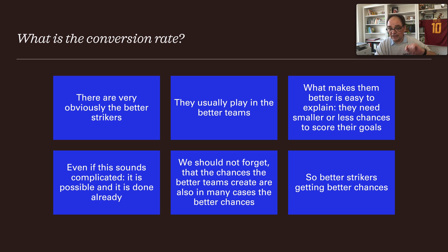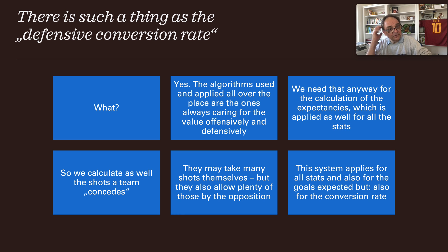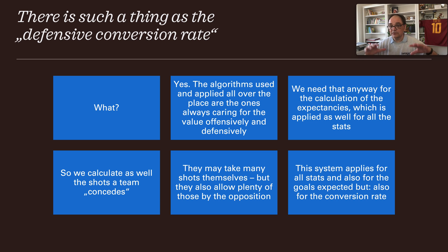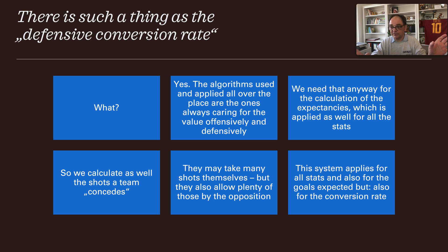Better teams create better chances, and the algorithms account for this both offensively and defensively. For the calculation of expected goals, goals to be scored are also adjusted for the opposing team's defensive strength. We always need the offensive rating from one side and the defensive rating from the other, and vice versa.